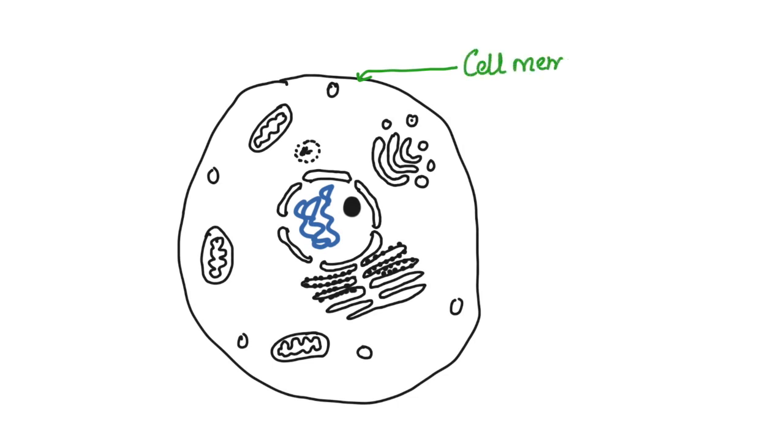Next we are going to label the cytoplasm. The cytoplasm is a fluid, jelly-like substance in which all the organelles are present.